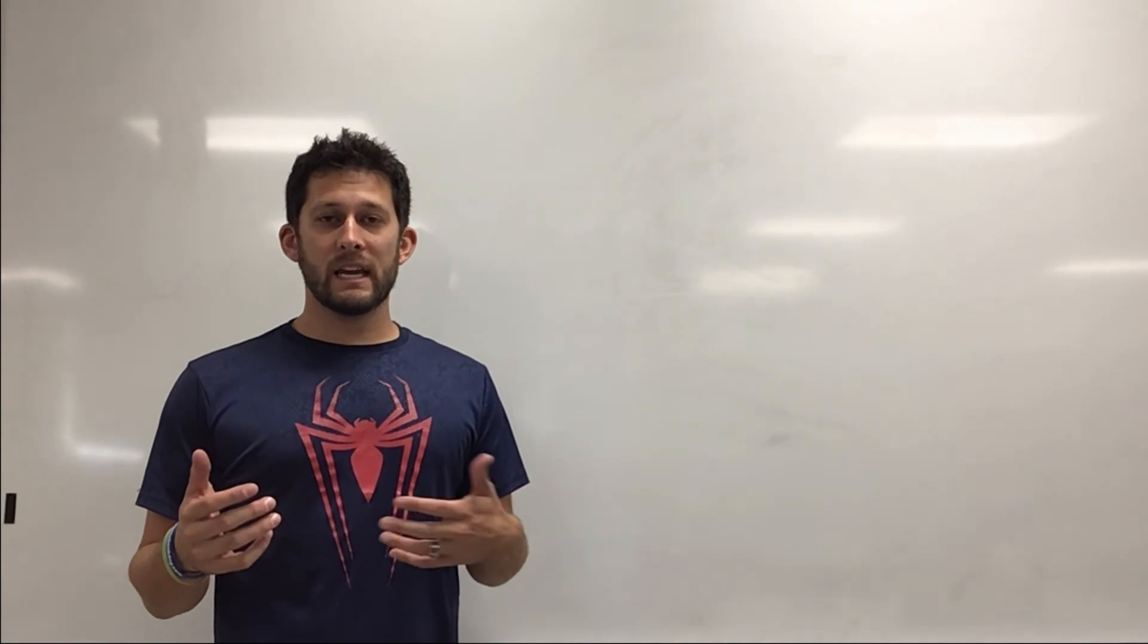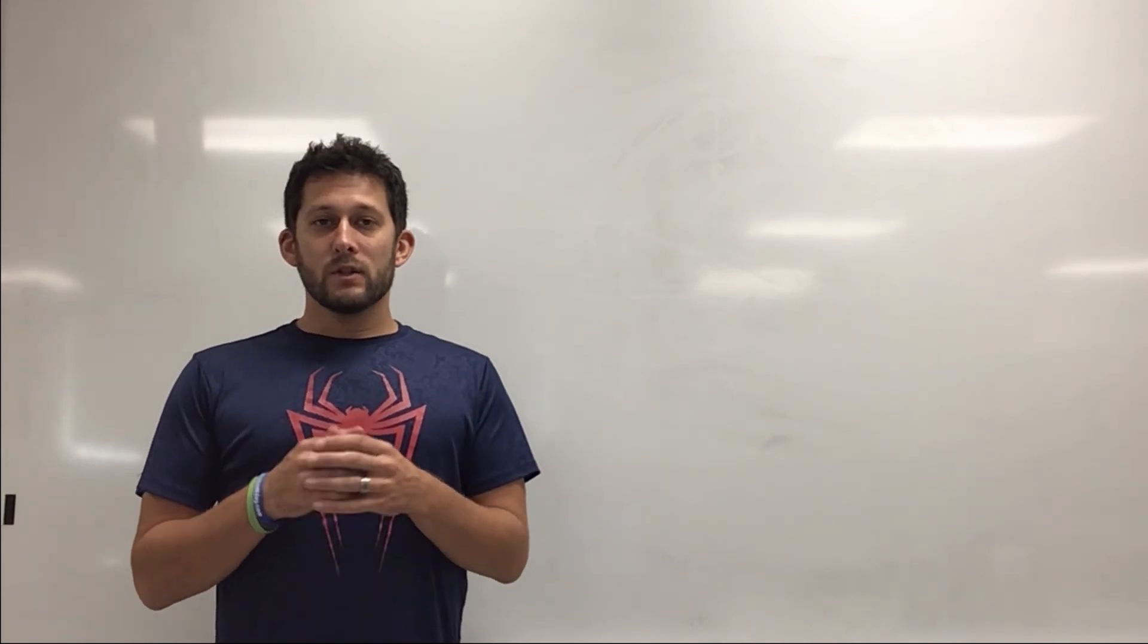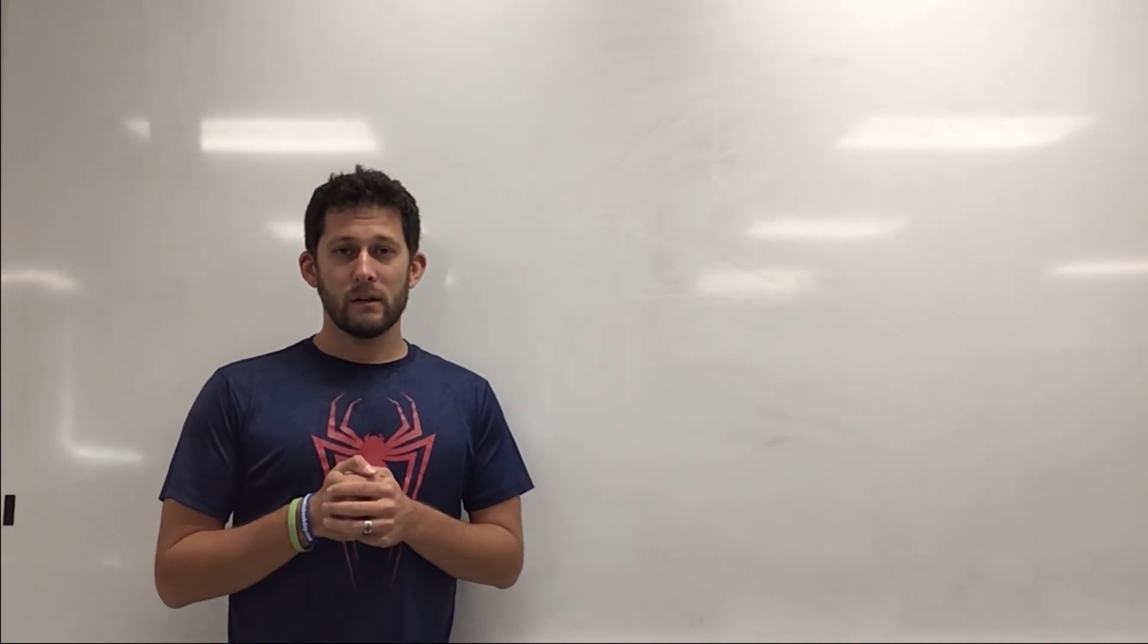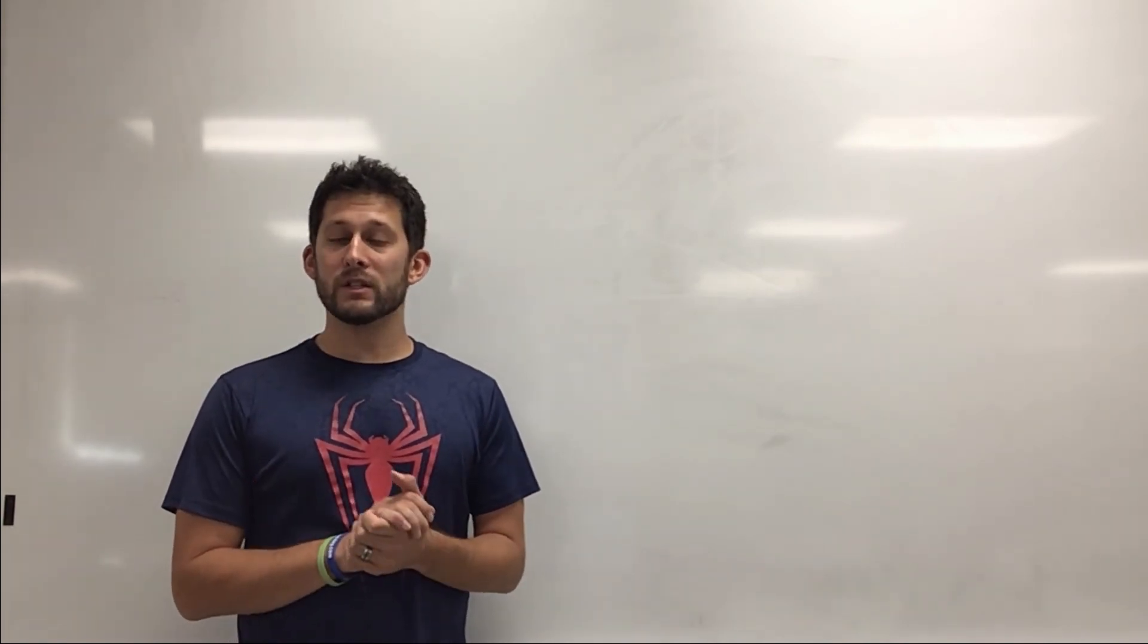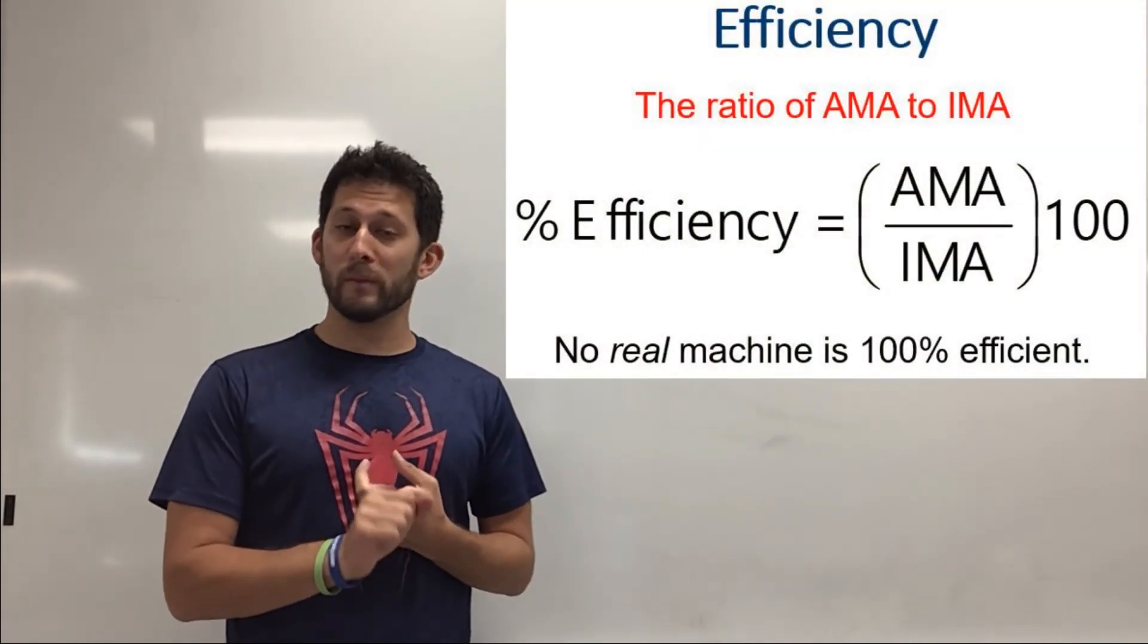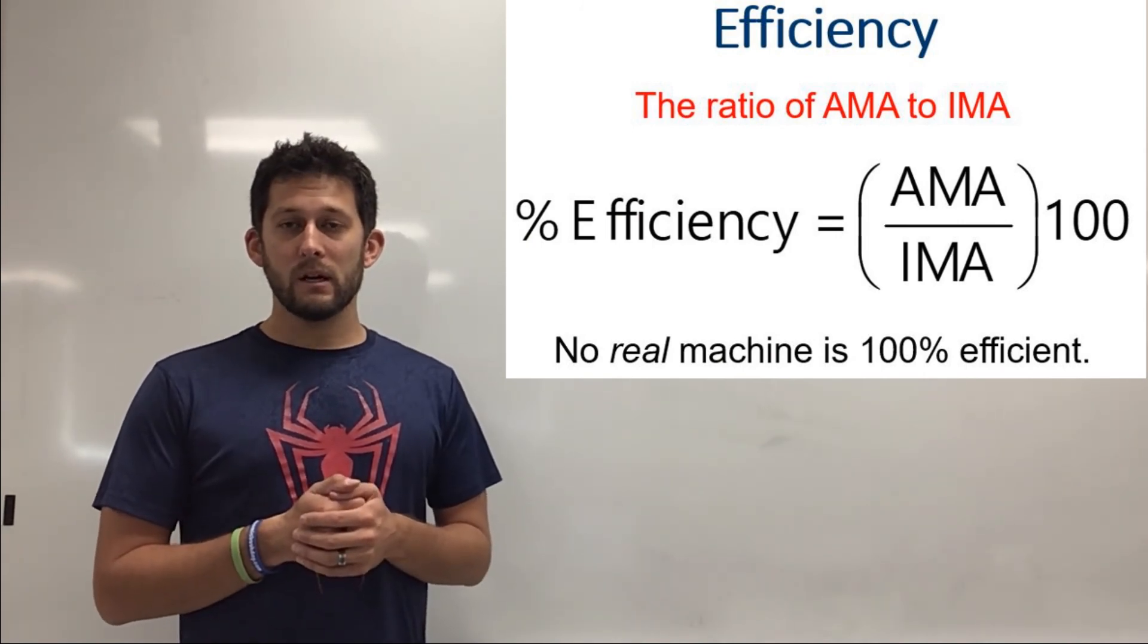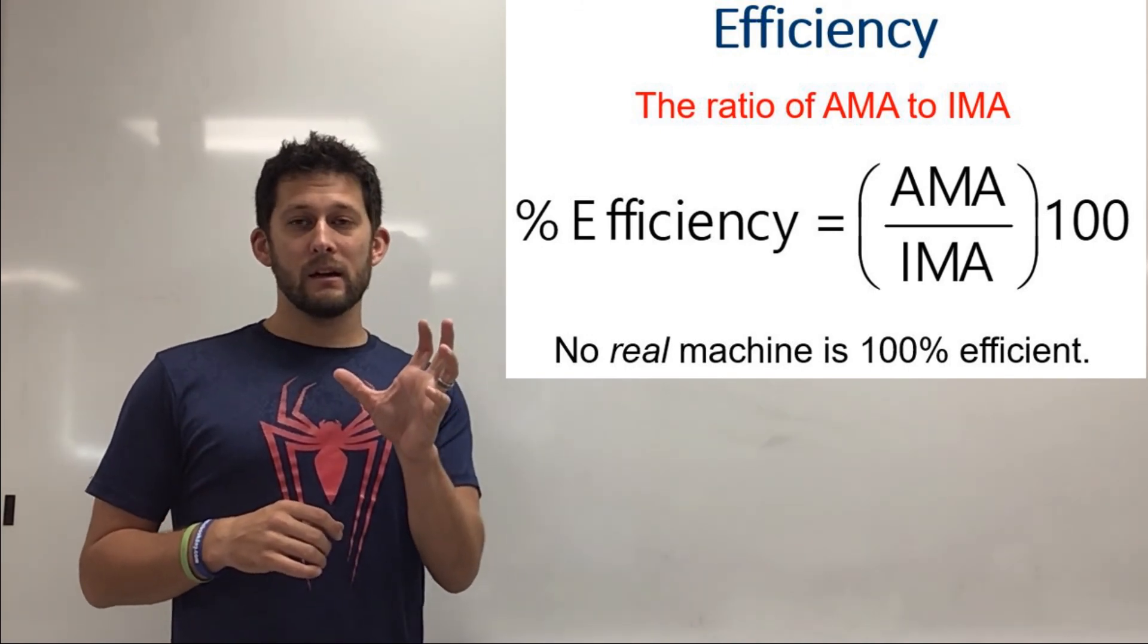Now our last idea is taking AMA and IMA into account to calculate the efficiency of a machine. So if you look at a machine especially in the real world you will never have a machine that's a hundred percent efficient. So we need to calculate exactly how much energy is potentially being lost in what we're doing. So to calculate the efficiency of a machine what you need to do is take the AMA, the actual mechanical advantage, the thing that you actually measure with forces, divided by the ideal mechanical advantage and multiply that by a hundred percent. So you're taking what you're actually getting divided by what you're possibly getting times a hundred percent.